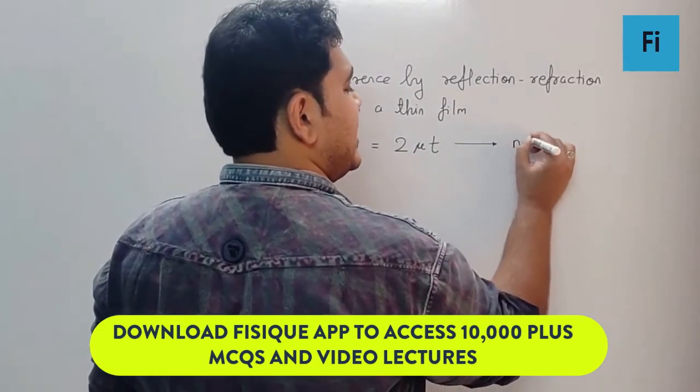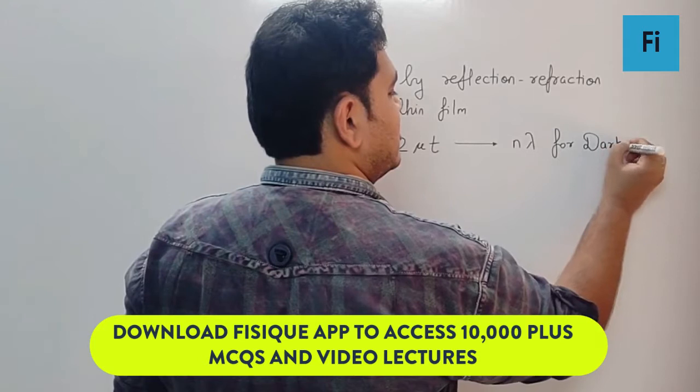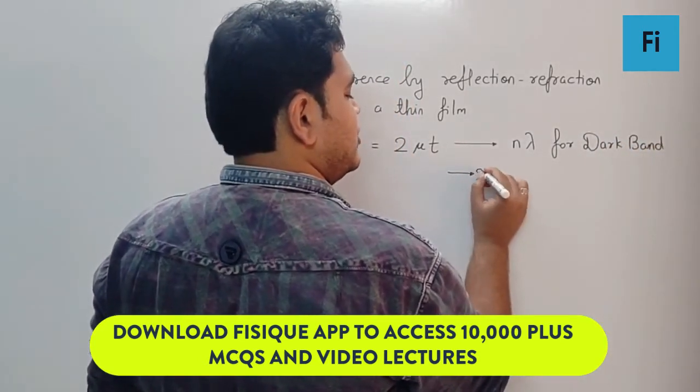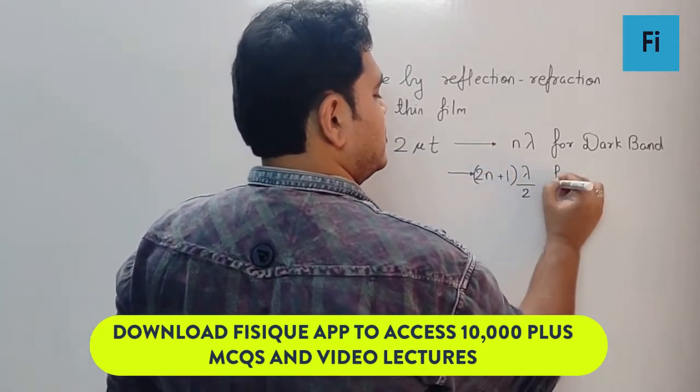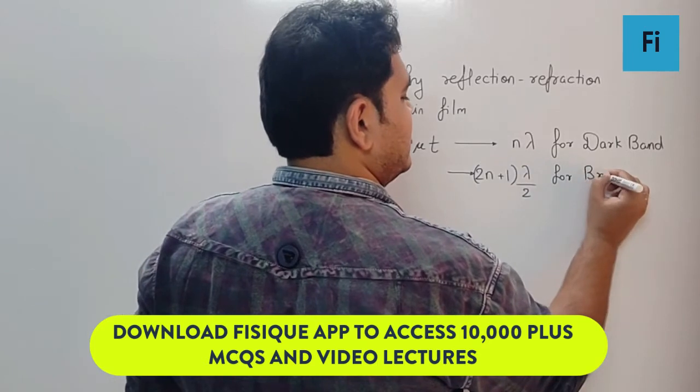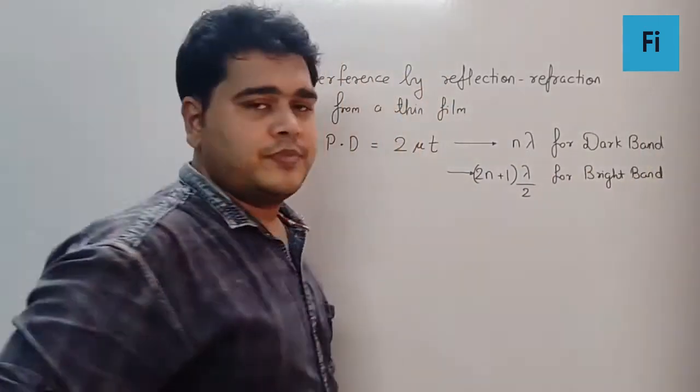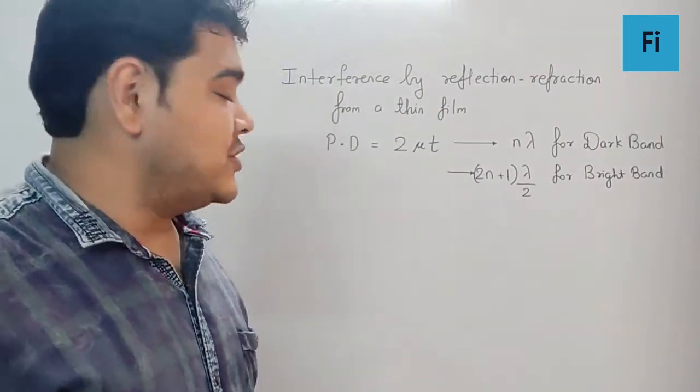This will be equal to nλ for dark band and (2n+1)λ/2 for bright band. Now why do I use this? The reason is quite simple.